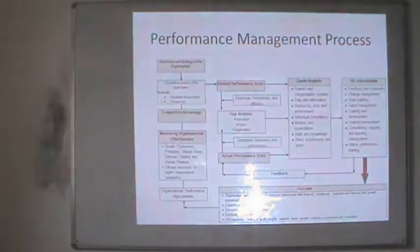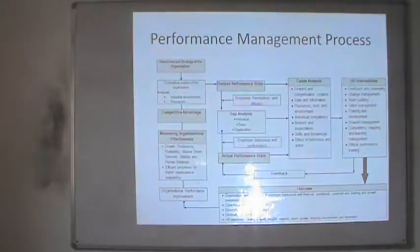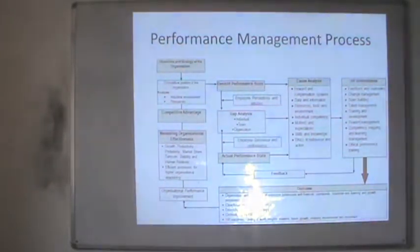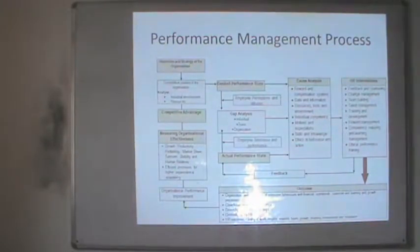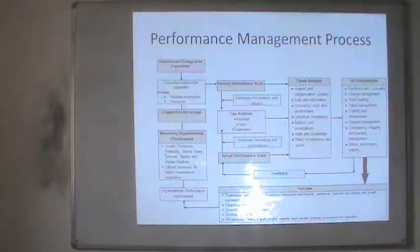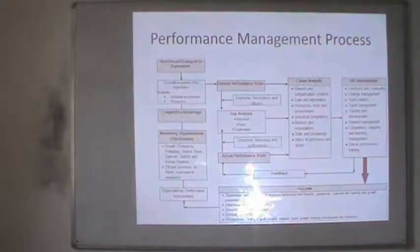The performance management process can be explained simply. The first step is identifying the objectives and strategy of the organization, and accordingly determining the measures of organizational effectiveness - whether it is productivity, profitability, turnover, or market share. From this, we determine the desired performance level, that is what level of performance is expected from the employees, and compare it with actual performance.